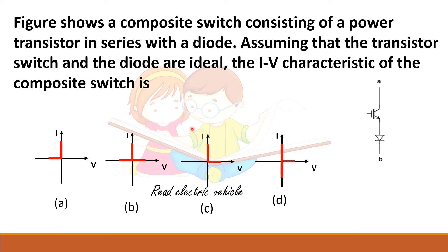This figure shows a composite switch where two devices — a transistor and a diode — are connected in series. Assuming both are ideal, what will be the IV characteristics of the switch? For a transistor, the IV characteristics show that it allows forward current and blocks forward voltage.